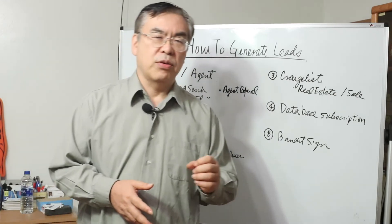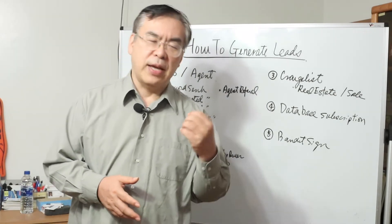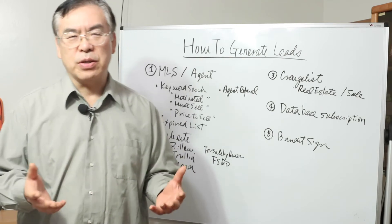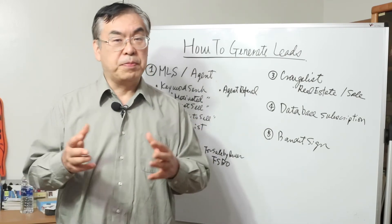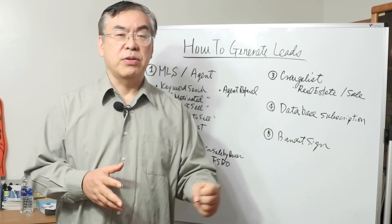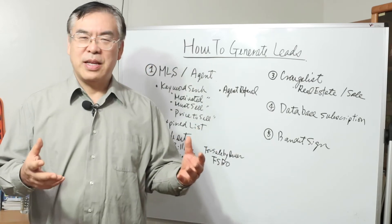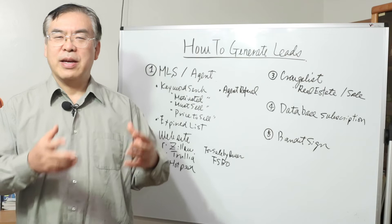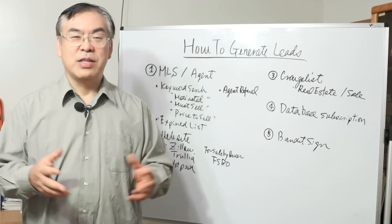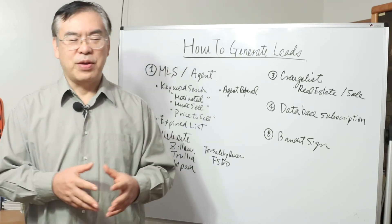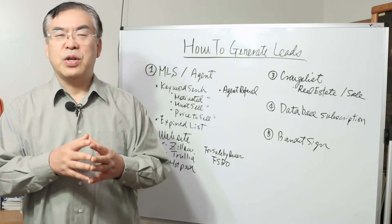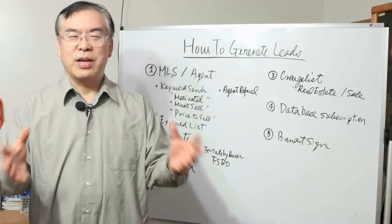You have to find out those investor friendly agents. In general, agents are living on the commission. Therefore, if you are sure to buy once they find good deals, they're going to work so hard to find the deals for you. If they bring the deal for you, they can buy from them. They can get double commission. This is a good incentive for the agent. Therefore, you have to work with those agents closely. If you have more agents, you can get more good deals.